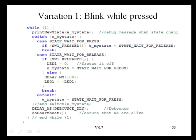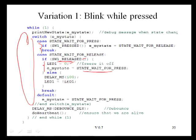Once the switch is released and this condition becomes true, we're then going to execute this code right here. We're going to freeze it off, change our state to wait for a press, and the next time through the loop we'll be executing this code here.